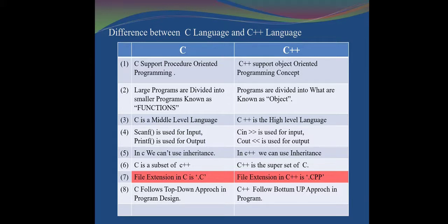C follows the top-down approach in program design. This means in C programming, the void main function is written first, and any extra functions the programmer wants are written after the void main function. In C++, it follows the bottom-up approach — the programmer first writes whichever class or function they need, and then void main is used. That is why it is called the bottom-up approach.